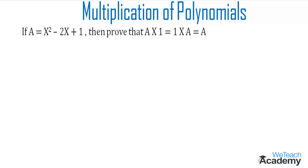To prove this, let us consider an example. If A is a polynomial x² - 2x + 1, then we have to prove that A × 1 = 1 × A = A.